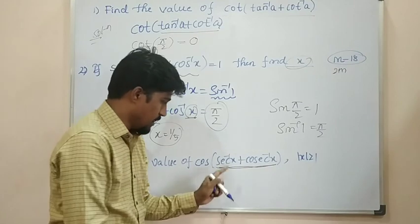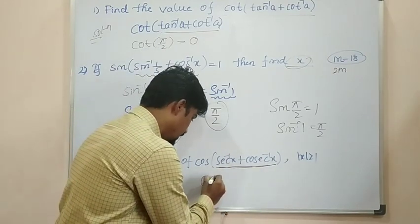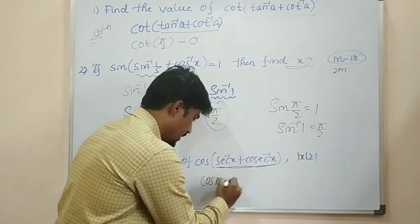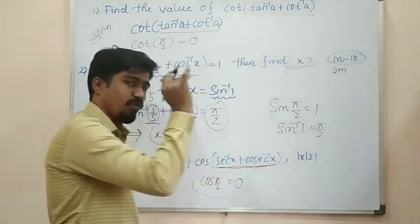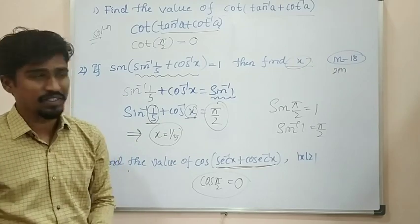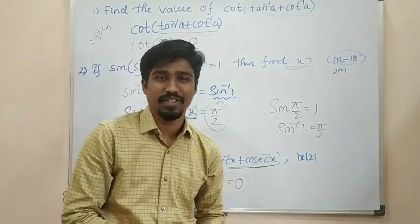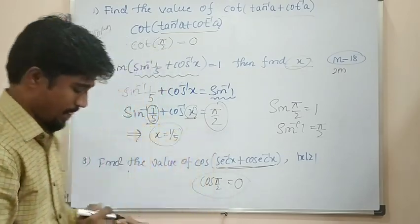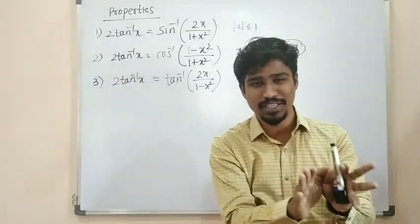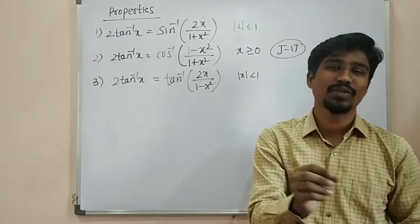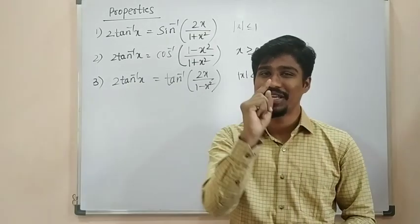We know that sec inverse(π/6) plus cosec inverse(π/6) gives π/2, so cos(π/2) value is simply 0. Very important and simple. We are going to have a mixed set of properties at the end of the program, and another set of simpler properties to solve.